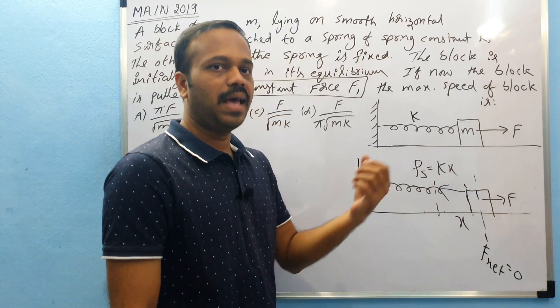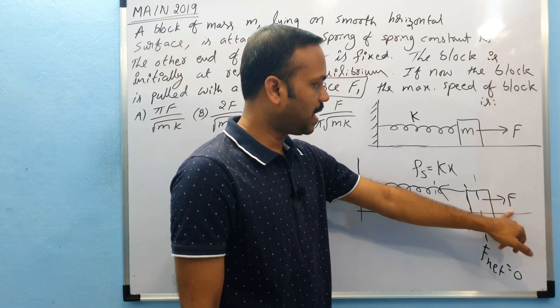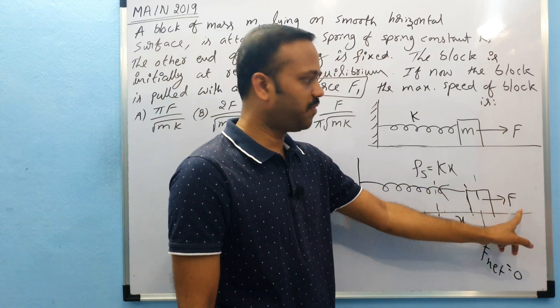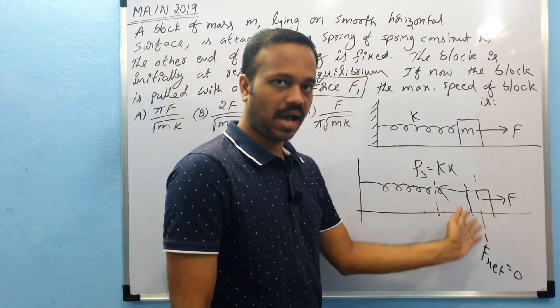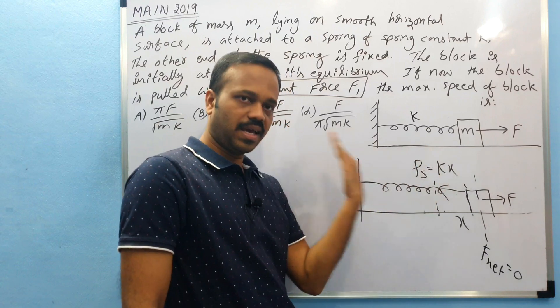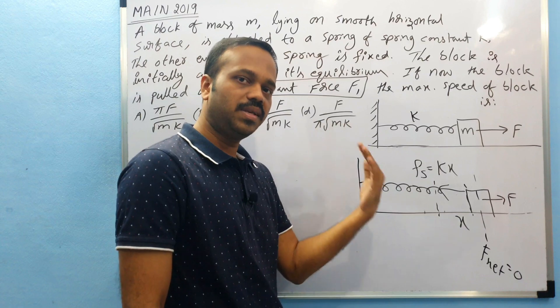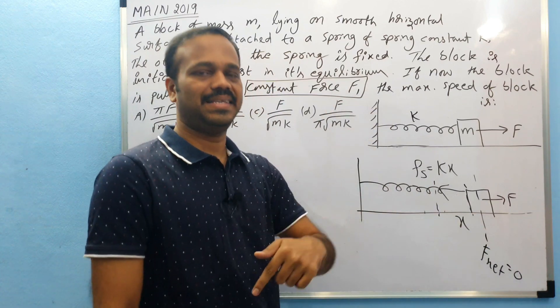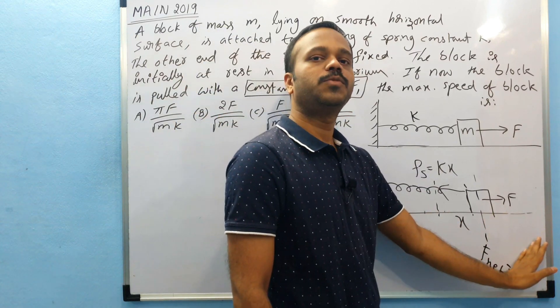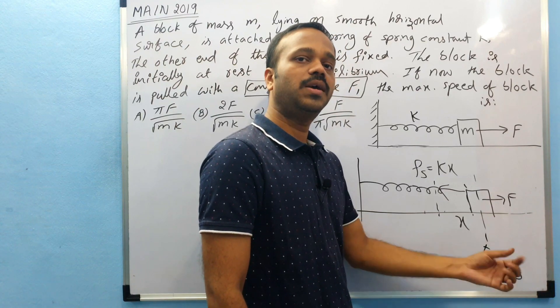But after this point, what happens? This F will be less than the kx because kx still increases after this, but F is constant. When kx is greater than F after this point, the net force will be in this direction towards left side and acceleration will be towards left side. That means the body gets decelerated, that means velocity decreases after this point. So where do you find maximum velocity? You find maximum velocity at this point where net force on the body is zero.